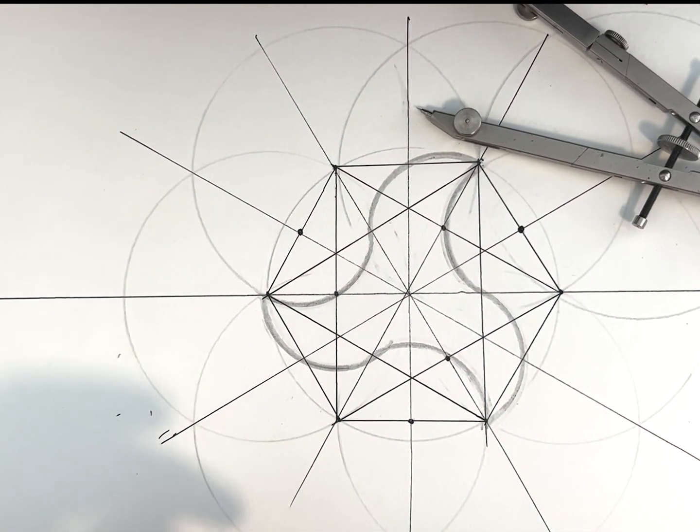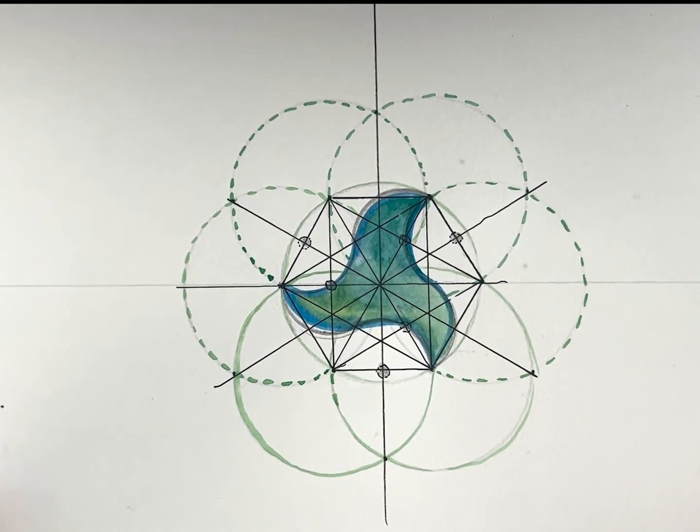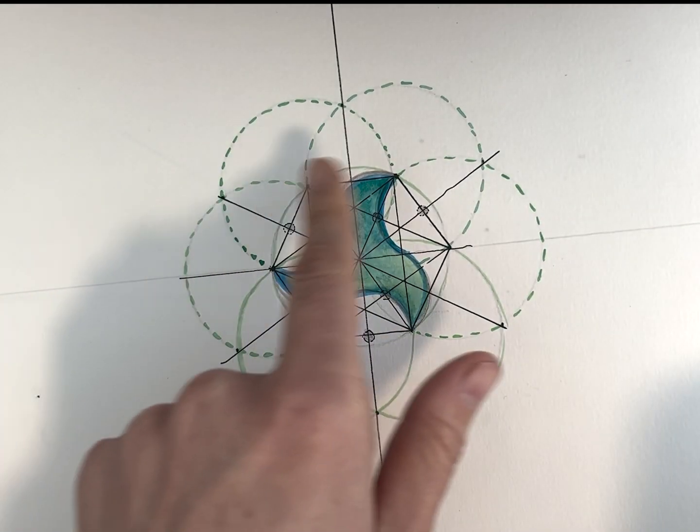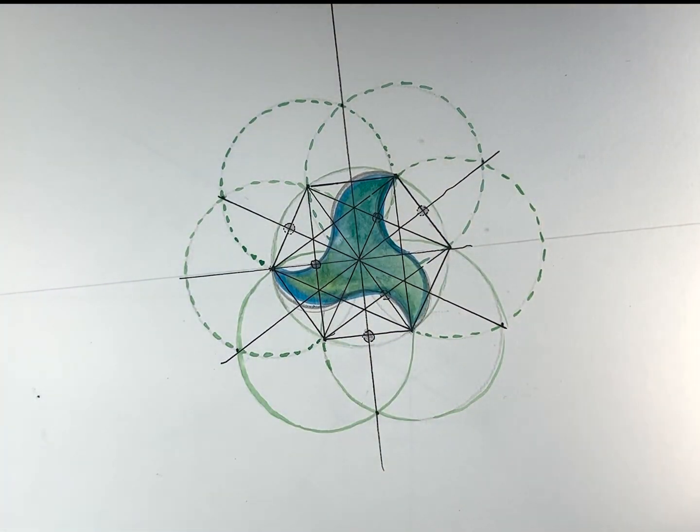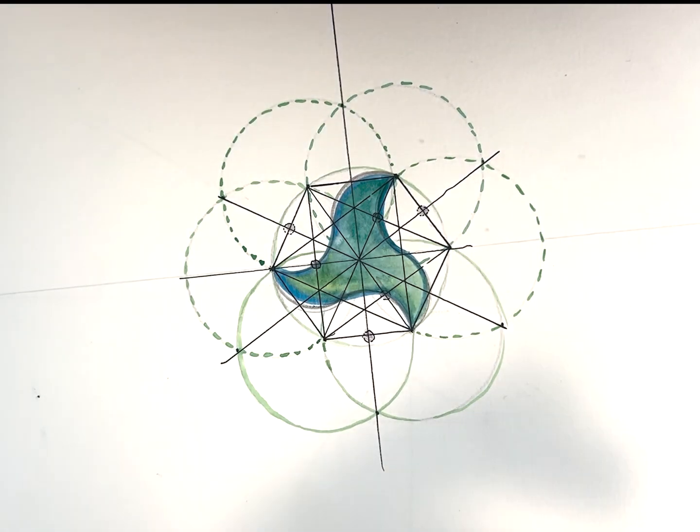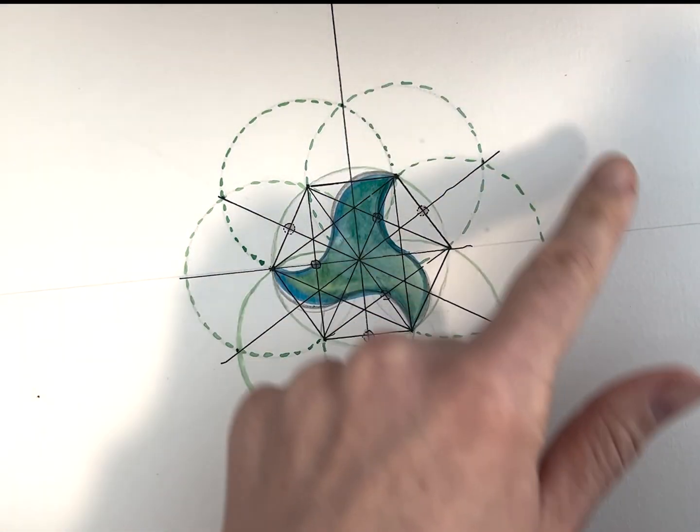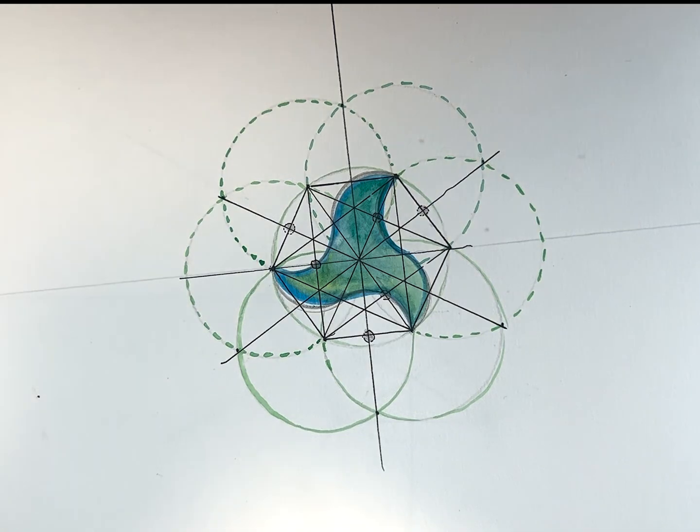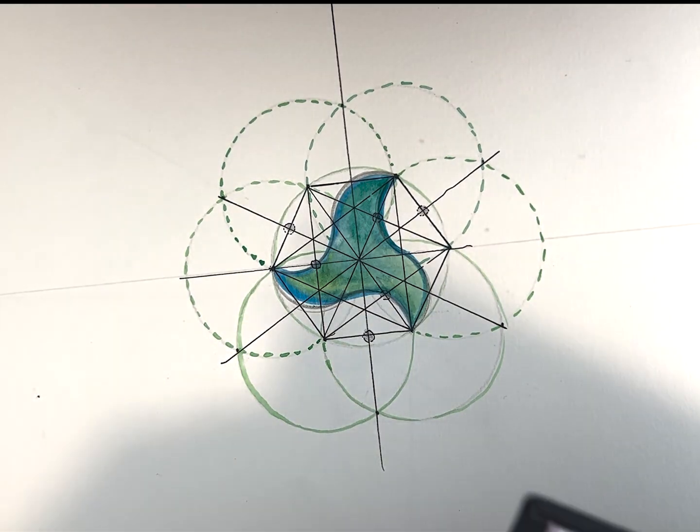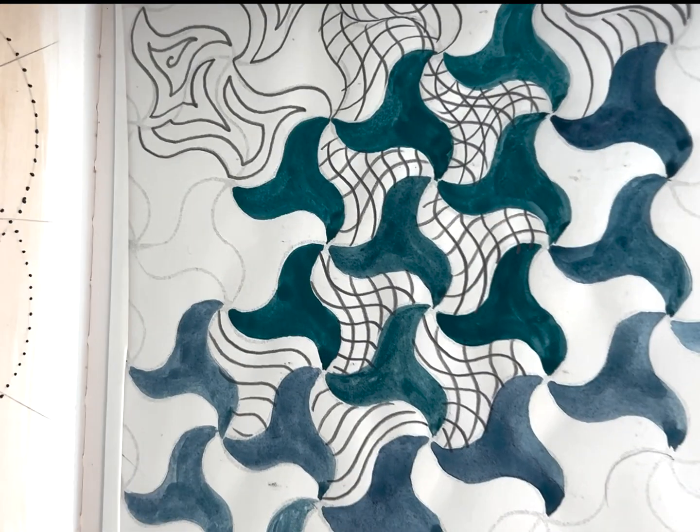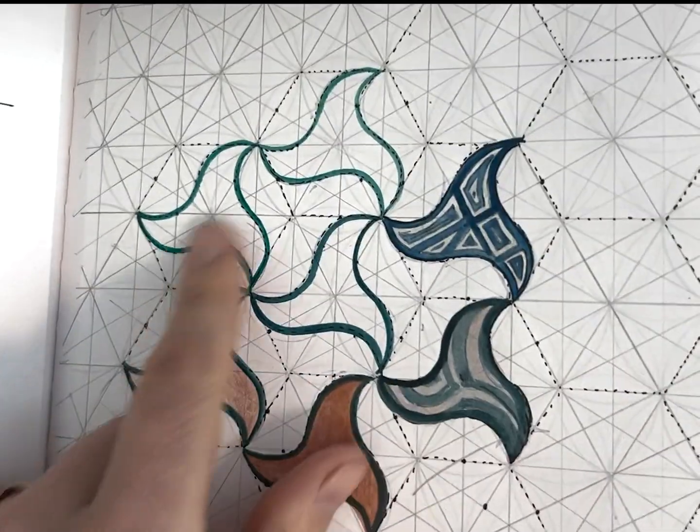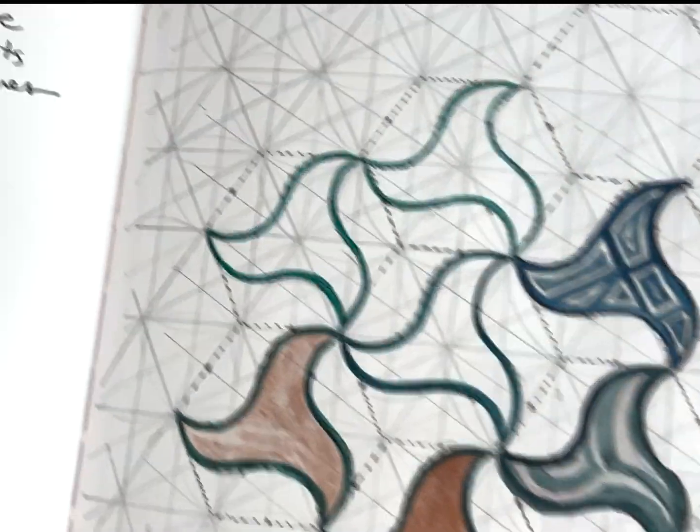The second thing we did was learn how to draw this wave pattern from the Alhambra. See, it's on a hexagon. So if you are familiar with geometry, you'll know that the hexagon actually interlinks like a beehive. And so once you know this pattern, you can actually go and create an interlocking hexagon pattern.